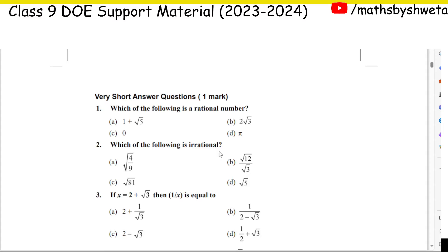In the very short answer section, what is MCQ? You have to click. If your basic concepts in the chapter are clear, you can do it. For example: which of the following is a rational number?